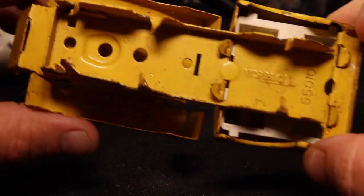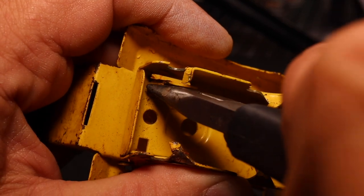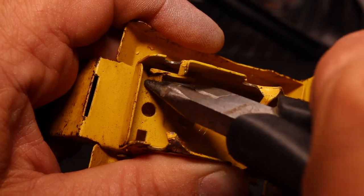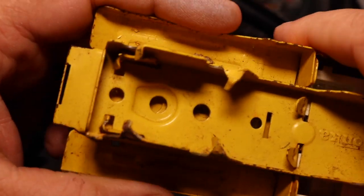After that, I'll remove the assembly that holds the mixer in place. It also has two tabs. They're a little bit more stubborn. They form like a little L-shape, and you have to slide them through the chassis of the vehicle.